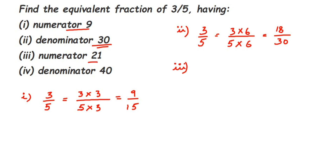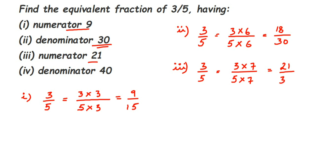For the third condition, we want numerator 21. Starting from 3/5, since 21 is greater than 3, we're multiplying. What do we multiply with 3 to get 21? It's 7. So we multiply both numerator and denominator by 7: 3 × 7 = 21 and 5 × 7 = 35. The equivalent fraction is 21/35.